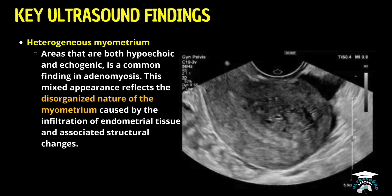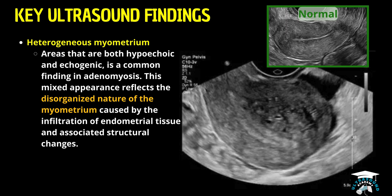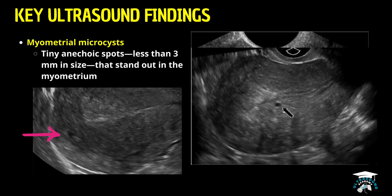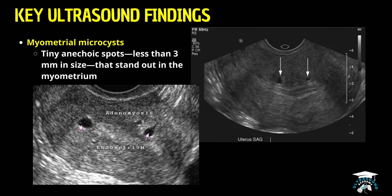Another big finding is a heterogeneous myometrium. Instead of that nice, smooth texture you're used to, the myometrium will look mixed with areas that are both hypoechoic and echogenic. One of the most specific findings is myometrial microcysts — tiny anechoic spots less than three millimeters in size that stand out in the myometrium. If you see these, adenomyosis should be high on your list of possibilities.